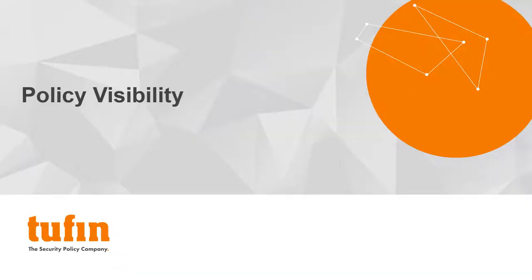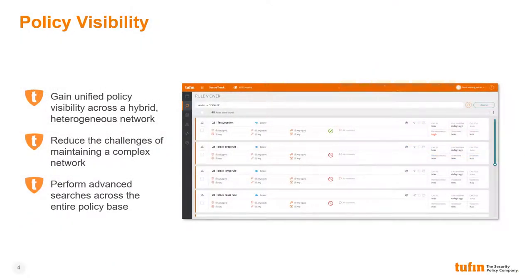Network and security policy visibility have always been at the core of Tufin's value proposition. Tufin provides enterprises with unified visibility across an increasingly heterogeneous and hybrid network ecosystem, which significantly reduces the challenges of managing these complex environments. With Tufin, enterprises can perform advanced policy queries across their entire policy base, offering comprehensive visibility into the relevant policies regardless of the vendor or device on which they reside.